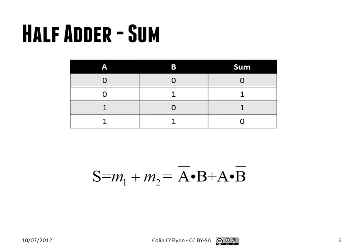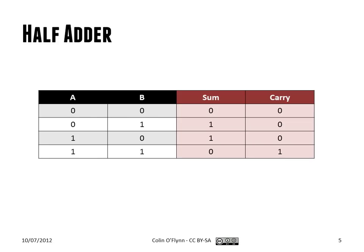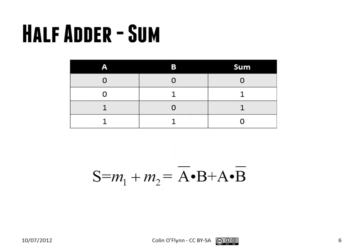We'll go through a design example using what we talked about before. With two outputs, we look at one at a time. For the sum output, we can write down the minterms. For example, this one is A complement ANDed with B, which gives us a sum of one, and this one is A ANDed with B complement. If we OR the two together, we get the sum of products form.